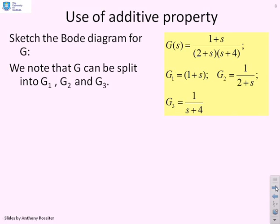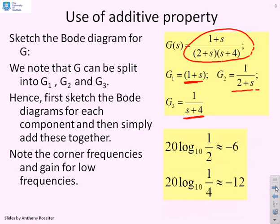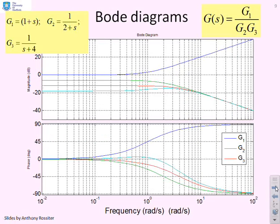Let's take a different example then. What happens if I want to sketch the Bode diagram for this one here? And now you'll see I've got three factors: 1 plus s, 1 over 2 plus s, and 1 over s plus 4. So again, what we could do is we could sketch the Bode diagram for each of these and add the result together. And I'll go straight to the result in this particular case. And you'll see that the diagram is beginning to get quite busy.